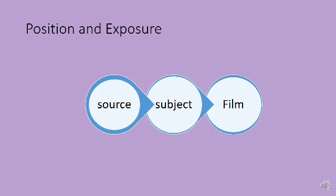Now let us discuss position and exposure. In any radiographic procedure we need a source and a film, with the subject placed in between. The source emits x-rays which pass through the subject, and the film receives them. Some rays are absorbed by the tissues and some are not. Where rays hit the film directly without any intervening tissue, that makes a black shadow. Where rays are absorbed by dense tissue like bone, that makes a white or dense shadow. Soft tissues absorb a certain amount of x-rays and allow some to pass through, and that is how they produce soft tissue shadows.